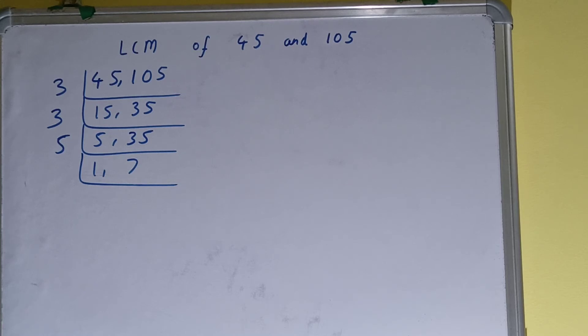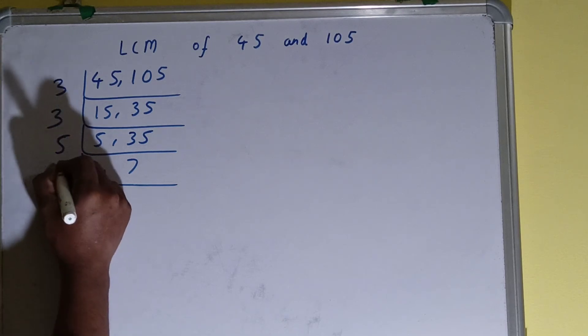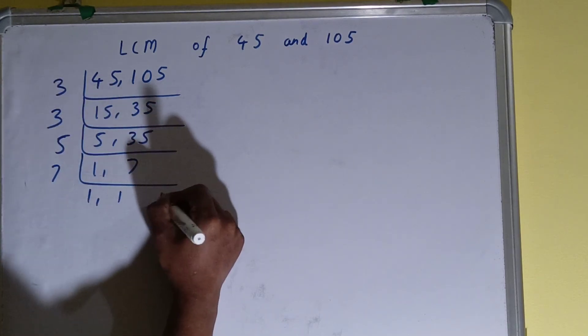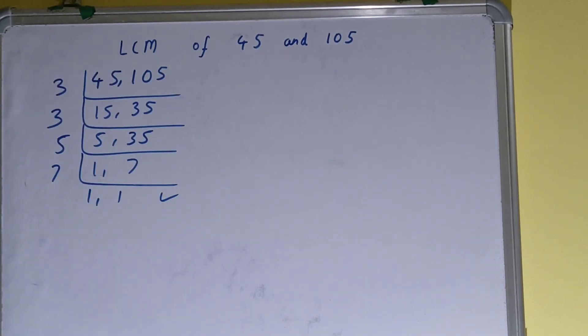And this second number is divisible by 7. So I'll divide and we'll be left with 1, 1. Once we get that, we need to stop and we need to do one last thing.